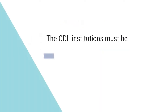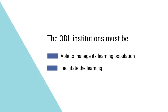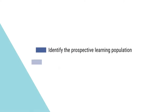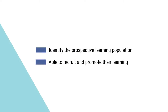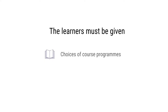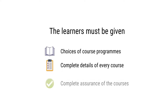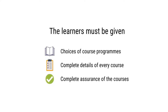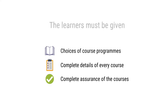Managing learning population: the ODL institutions must be able to manage their learning population and facilitate their learning. The first step is to identify the prospective learning population and being able to recruit and promote their learning. The learners must be given a choice of courses, complete details of every course, and complete assurance of the credibility of the courses offered by the institution.